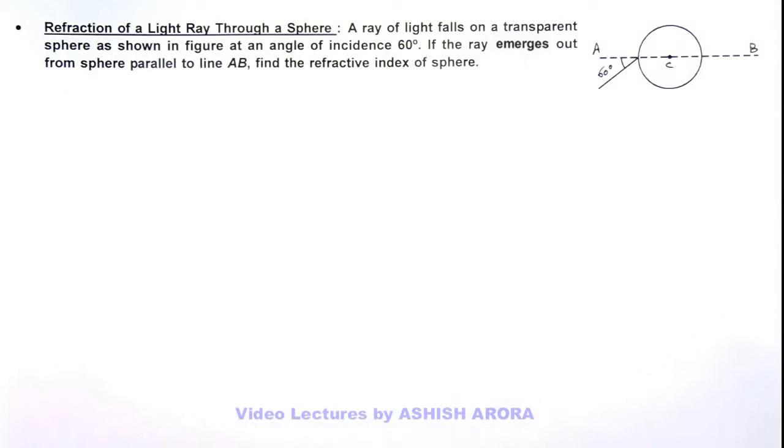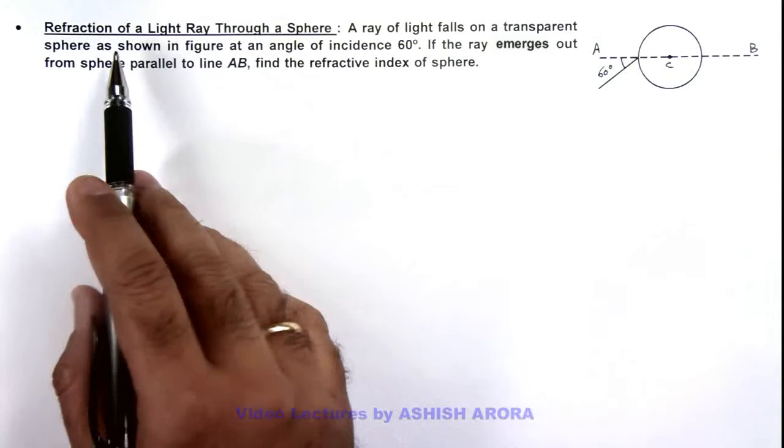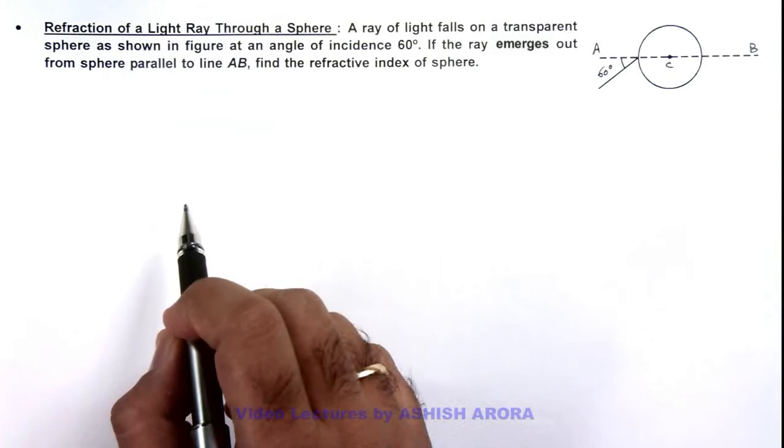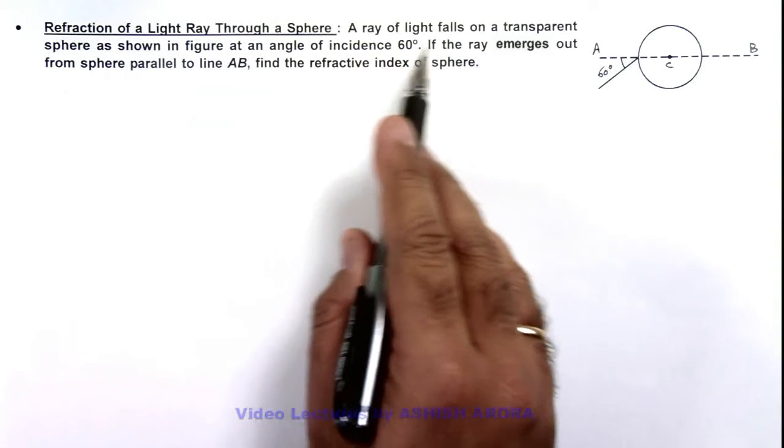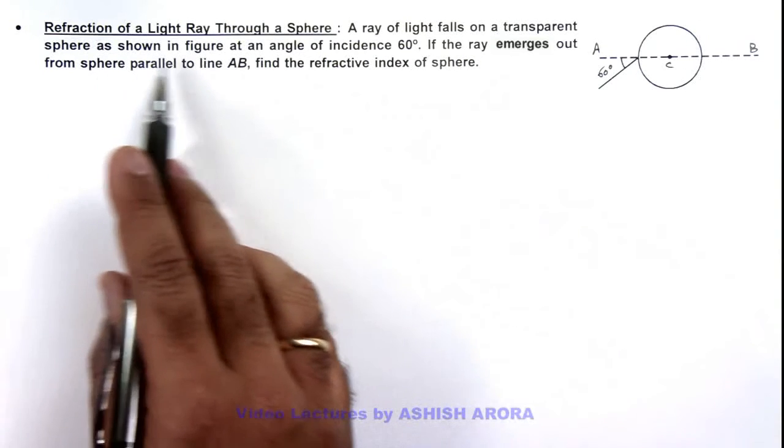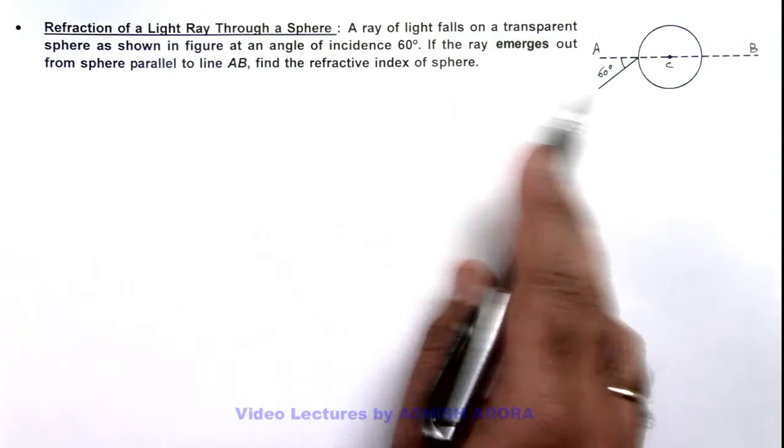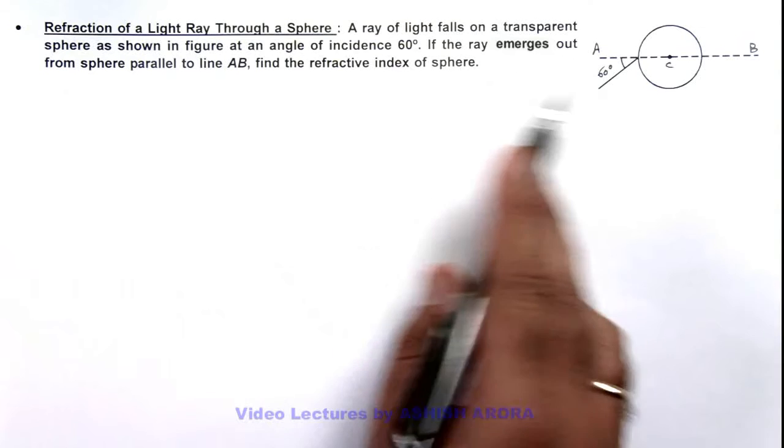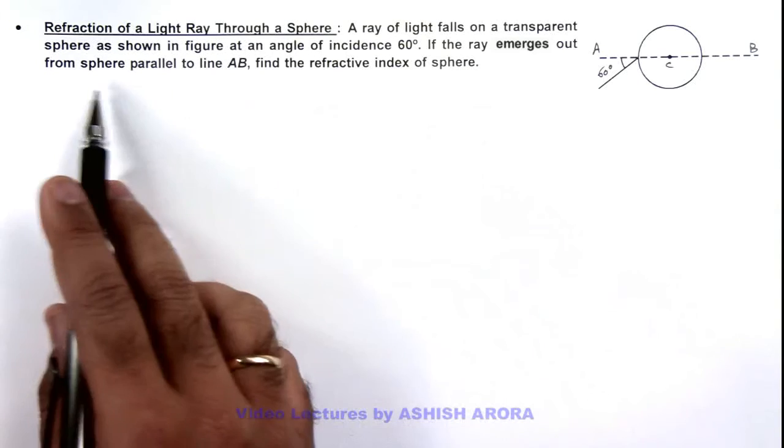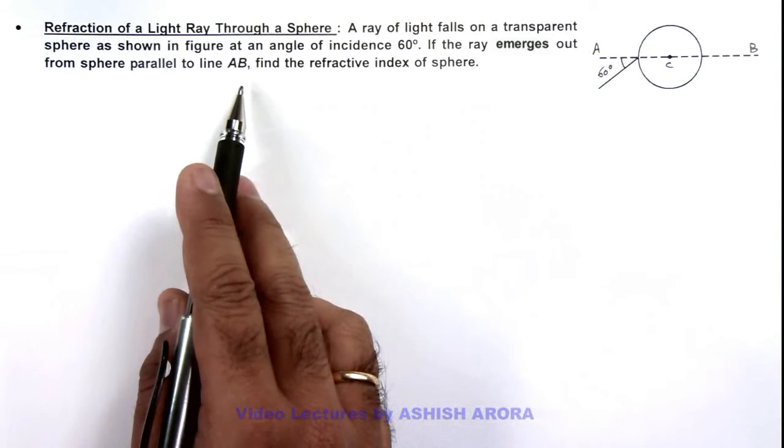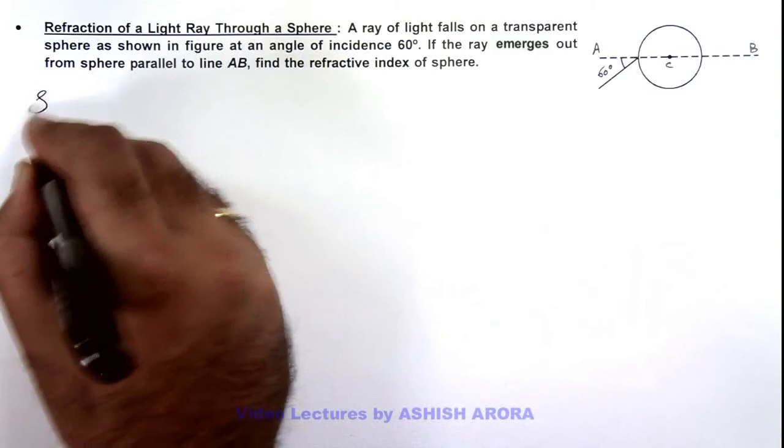In this illustration, we'll demonstrate the refraction of a light ray through a sphere. We are given that a ray of light falls on a transparent sphere as shown in the figure at an angle of incidence 60 degrees. If the ray emerges from the sphere parallel to line AB, we are required to find the refractive index of the sphere.